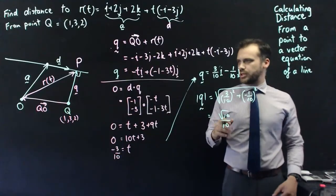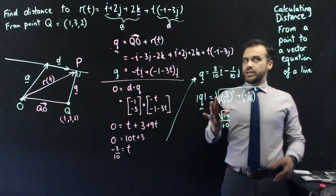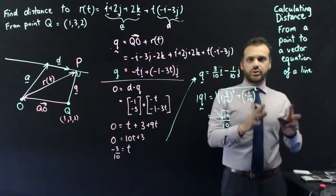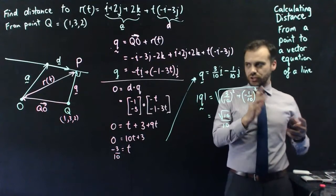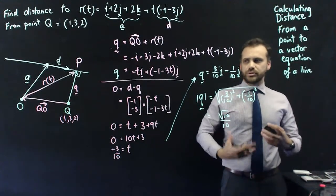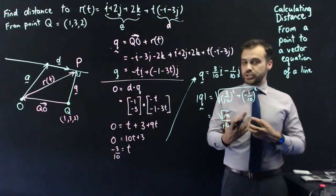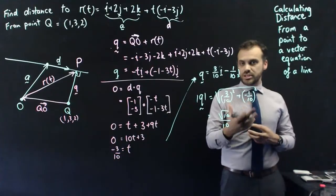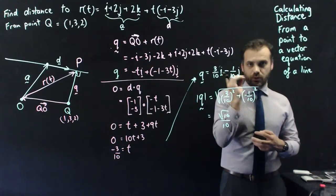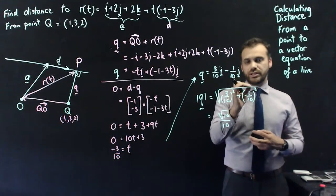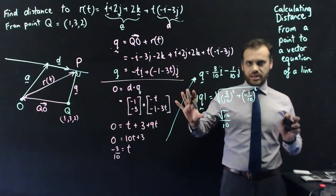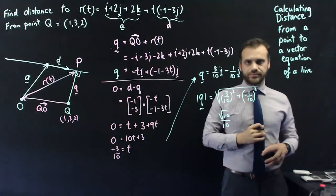That is calculating the distance from a point to a vector equation of a line. You really need to get comfortable drawing pictures, but you also need to be comfortable with the idea of what a vector equation really and truly is — otherwise none of that is going to make sense.